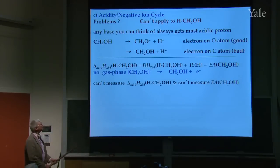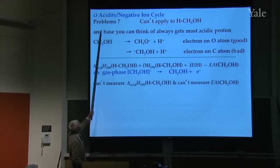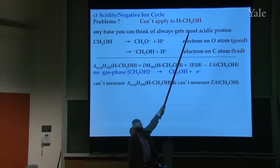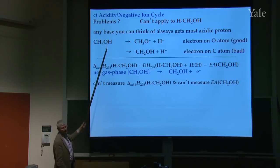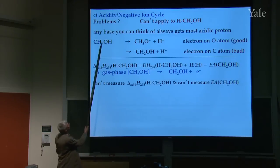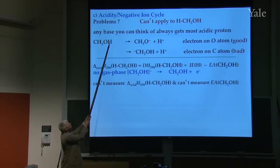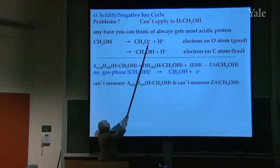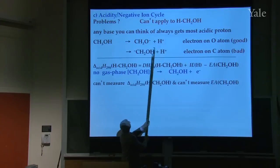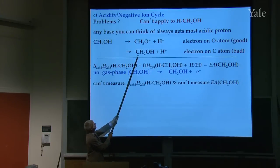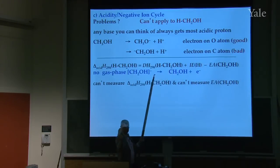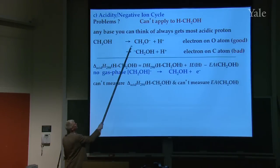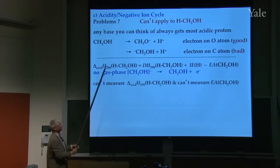No experimental system is perfect. For example, I just showed you how to measure the OH bond. Suppose you want to measure the CH bond — this will never work, because the negative ion cycle will never work. When you take any base and apply it to methanol, the base is always going to take off the most acidic proton. The most acidic proton is on the OH, because you get the negative ion with the electron on the oxygen. If you try to pull a proton off the carbon, you'd put the electron on the carbon atom, and that's bad — oxygen is more electronegative.